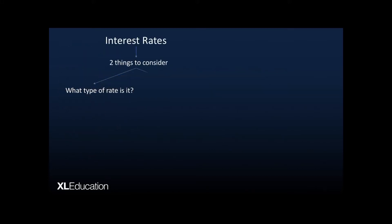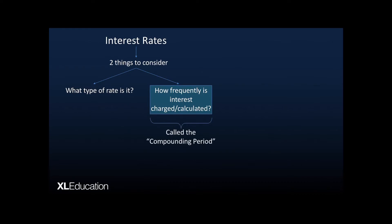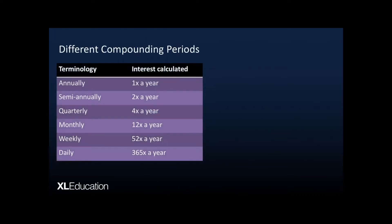The other thing we have to consider is how frequently interest is calculated or charged — this is called the compounding period. If interest is compounded annually it means once a year; semi-annually means twice a year; quarterly four times a year; monthly 12 times a year; weekly 52 times a year; and daily 365 times a year. We've got to be familiar with those terminologies.